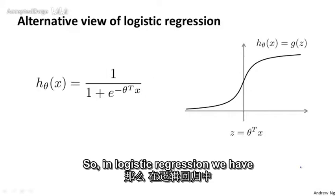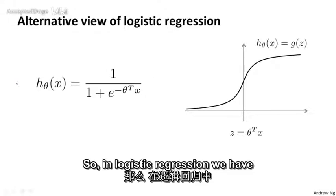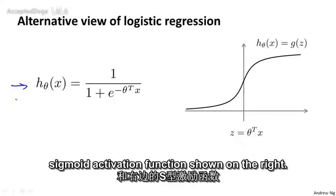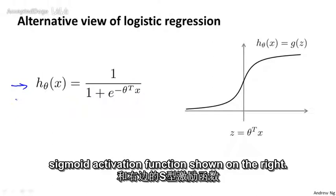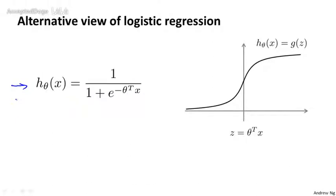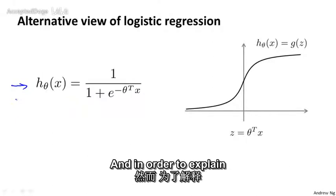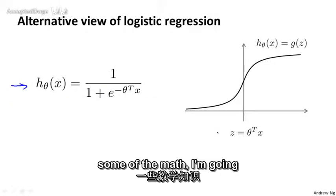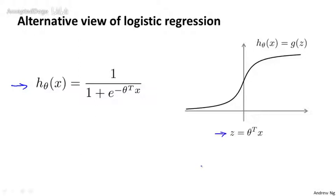In logistic regression, we have our familiar form of the hypothesis and the sigmoid activation function. In order to explain some of the math, I'm going to use z to denote theta transpose x.